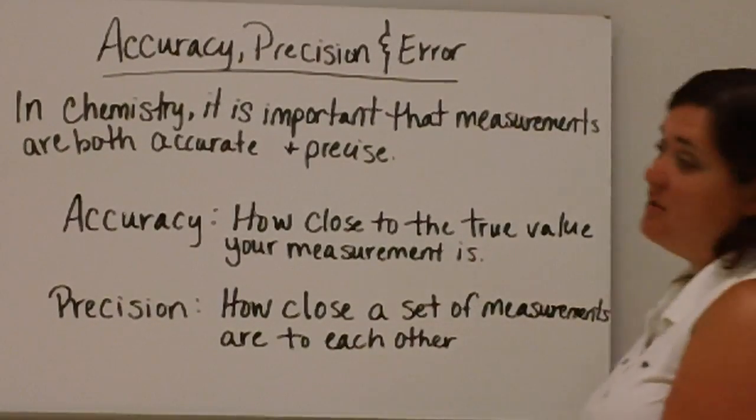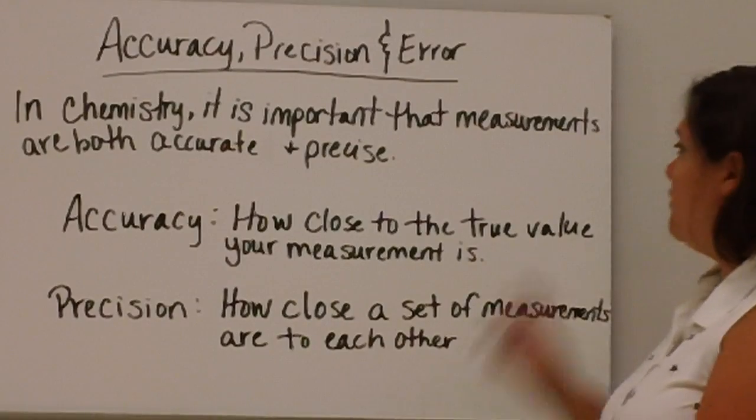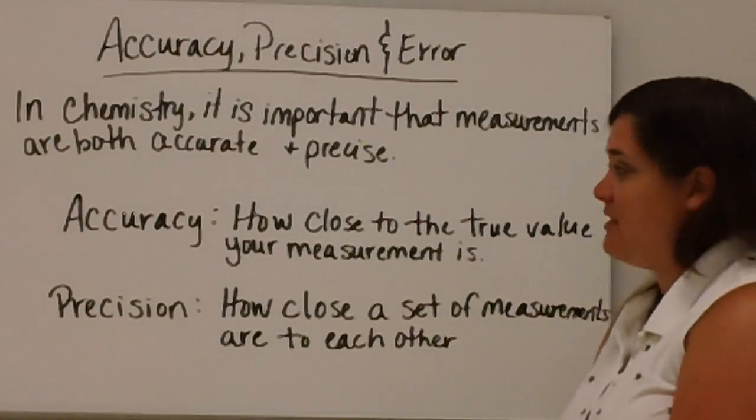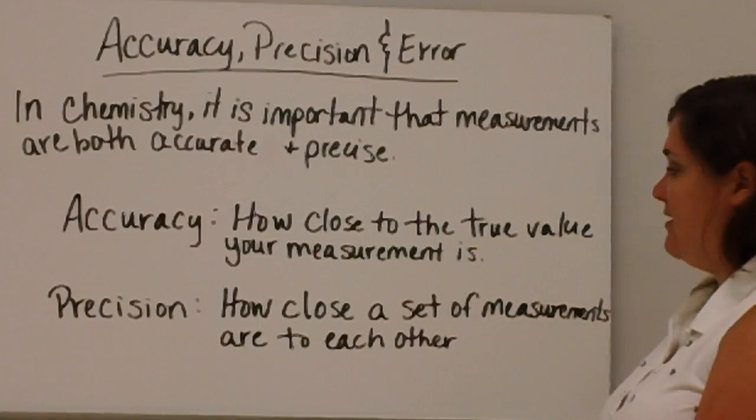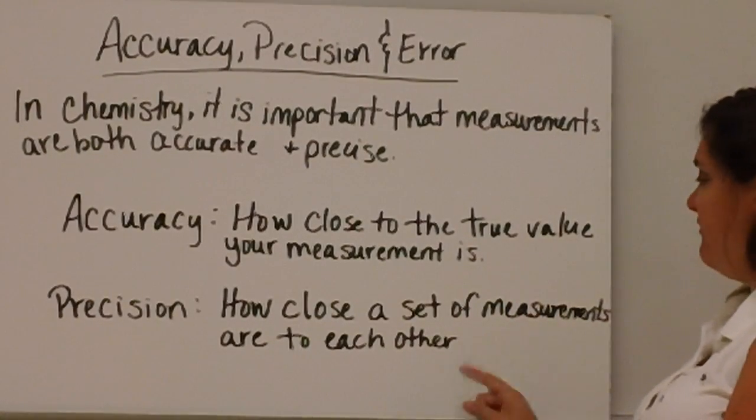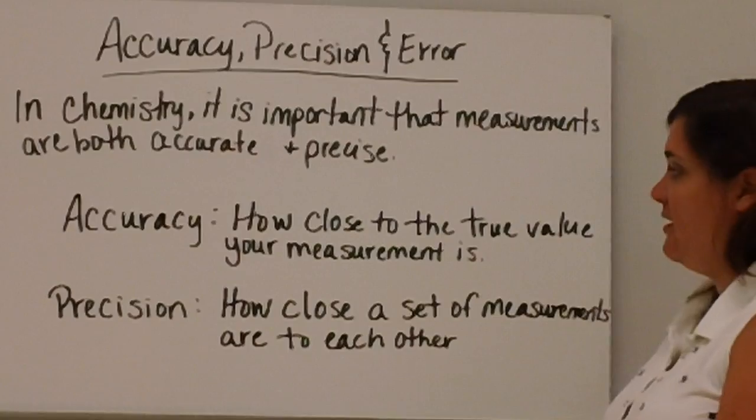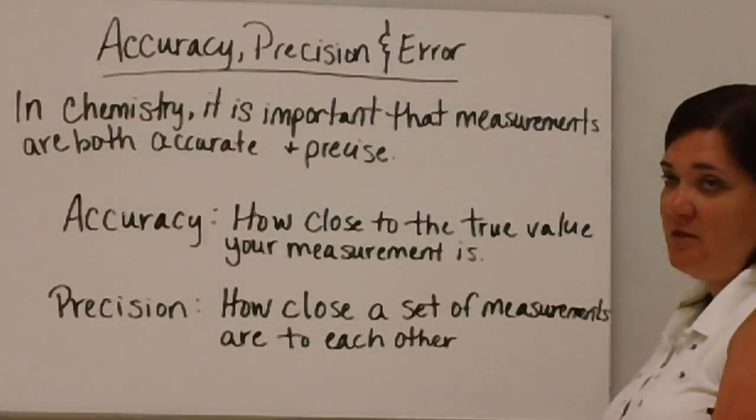Today's lesson is on accuracy, precision, and error. In chemistry, it's important that measurements are both accurate and precise. Accuracy is how close to the true value your measurement is, and precision is how close a set of measurements are to each other. These two terms are often misused.